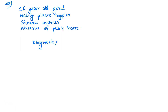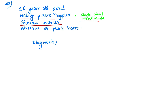Question number 47: a 16-year-old girl with widely placed nipples, streak ovaries on USG, absence of pubic hair, shield chest, and web neck — from these clinical clues, the diagnosis is Turner syndrome.